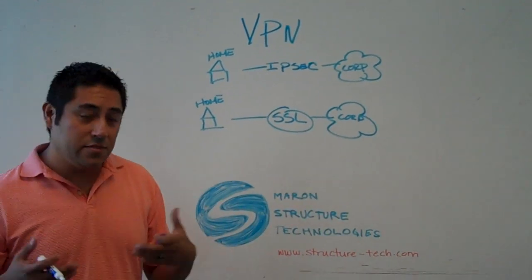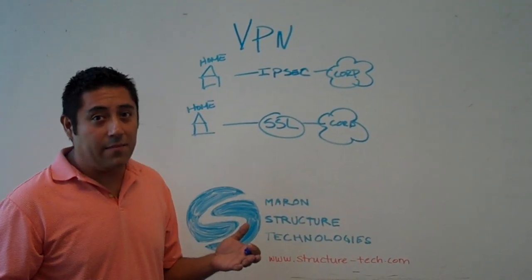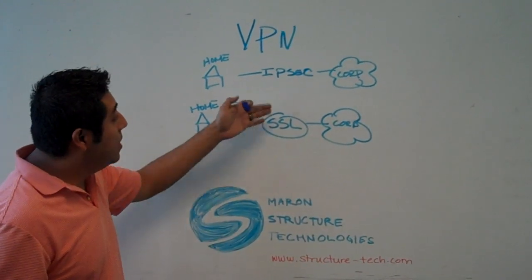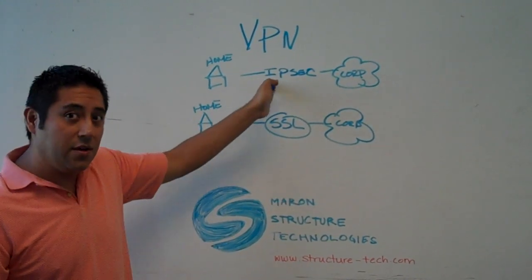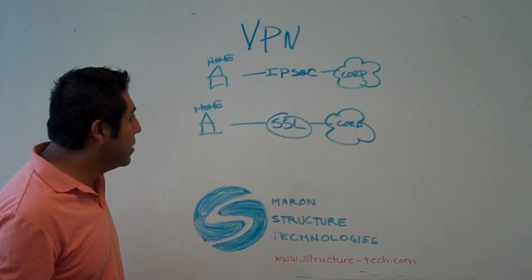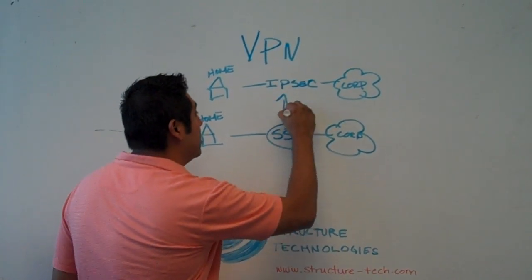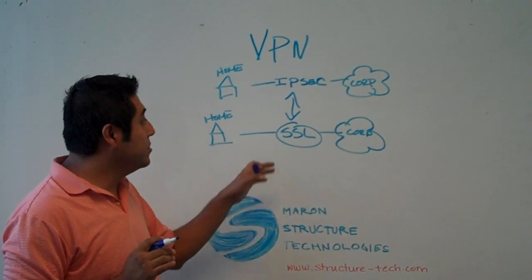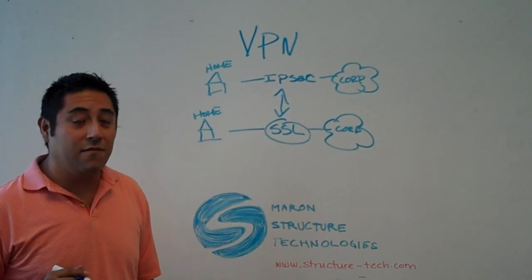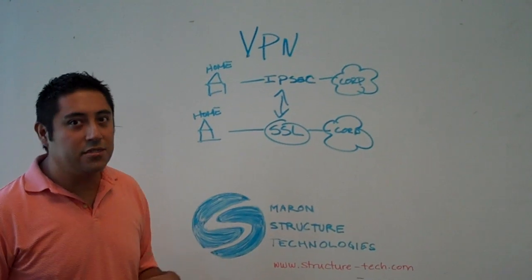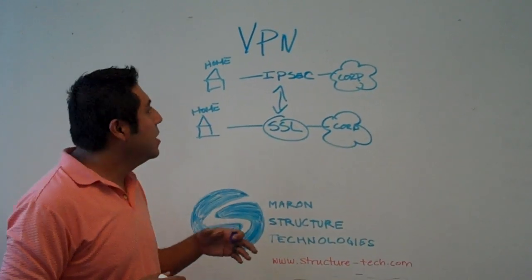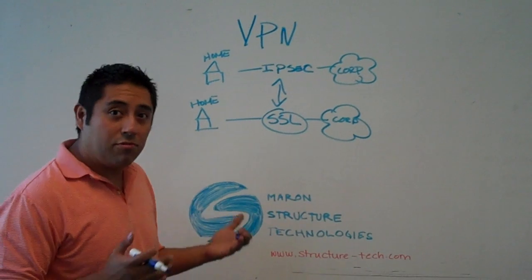Now, in the past, many security experts and also many users were concerned that SSL would not be able to deliver the security that IPsec is accustomed to delivering. However, now these two technologies have merged, and have created the SSL with IPsec tunneling feature, which allows you to actually do what you typically see in a point-to-point VPN, which is layer 3 functionality.